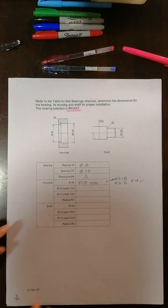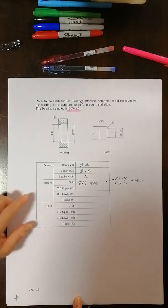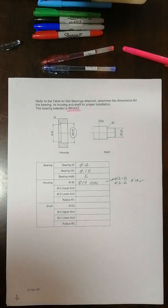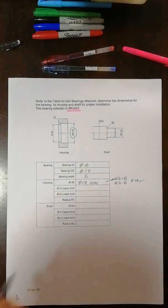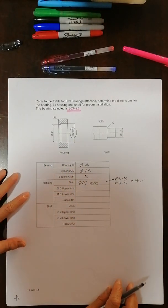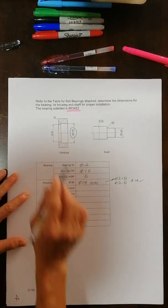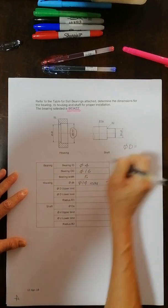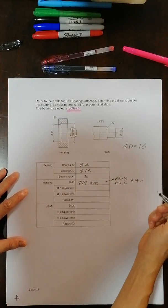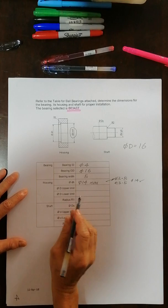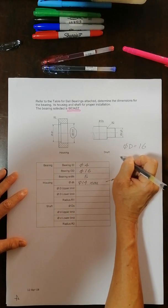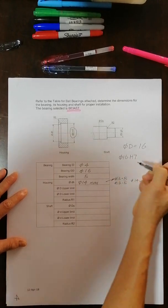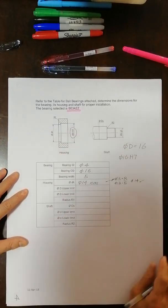Now, what is the DH upper limit? DH is actually diameter DH upper limit. What is D now? D is actually the bearing outside diameter. So diameter D is actually 16. So the question is, what is the upper limit? What is diameter 16 H7? H7. What is the upper limit and lower limit?